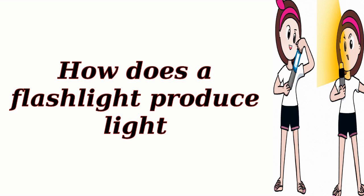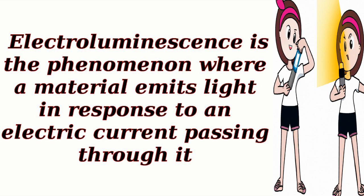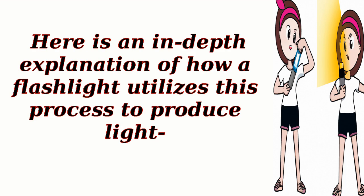How does a flashlight produce light? A flashlight produces light through a process called electroluminescence. Electroluminescence is the phenomenon where a material emits light in response to an electric current passing through it. Here is an in-depth explanation of how a flashlight utilizes this process to produce light.